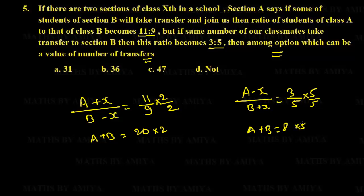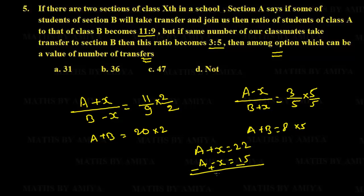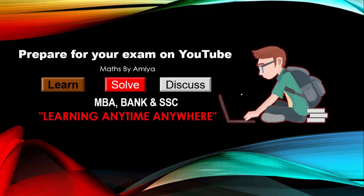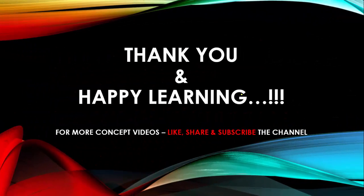After scaling to LCM 40: A + x = 22 and A − x = 15 in ratio terms. Subtracting: 2x = 7, so x = 7/2. Therefore x must be a multiple of 7. Checking the options, none of them is a multiple of 7, so the answer is 'none of these.' Always use the LCM to equate totals rather than multiplying the two totals directly, as that can give a misleading impression. If you have any doubts, feel free to reach out. Thank you and happy learning!